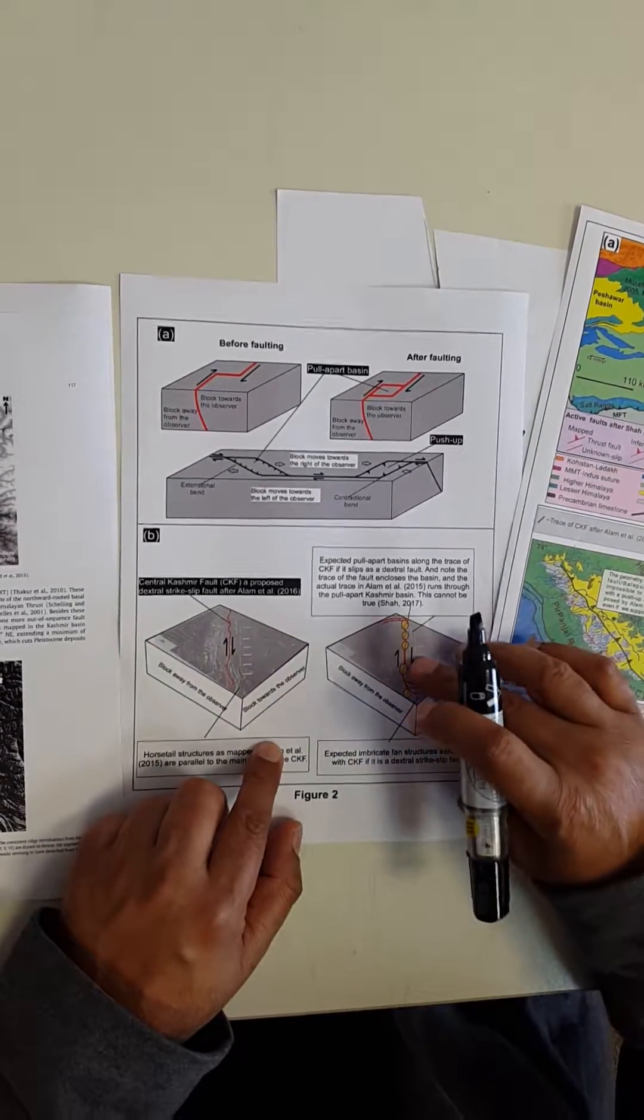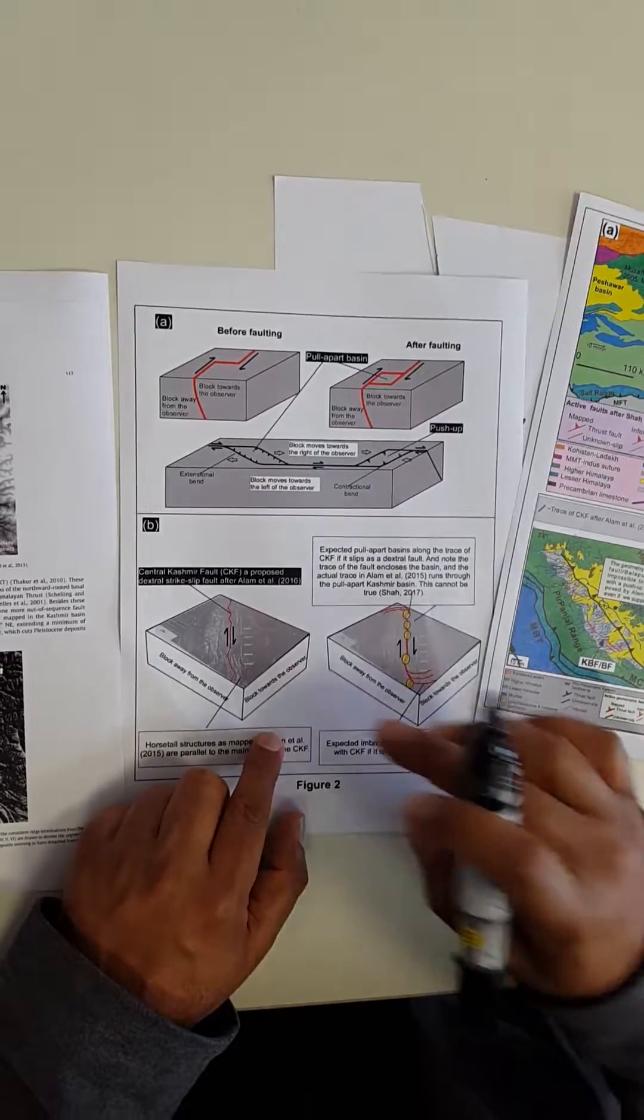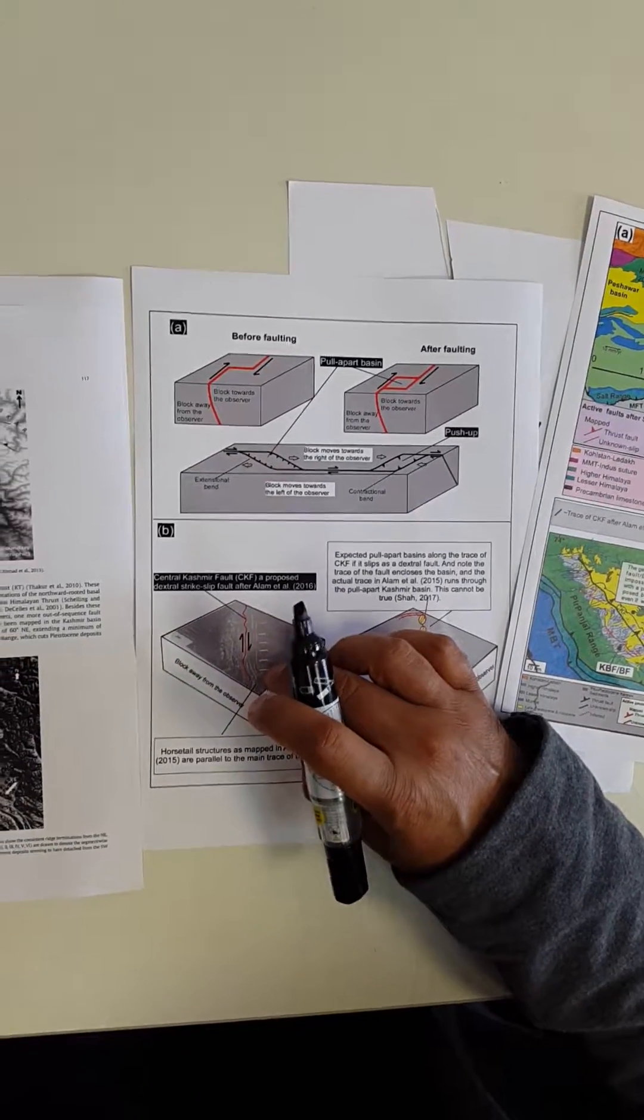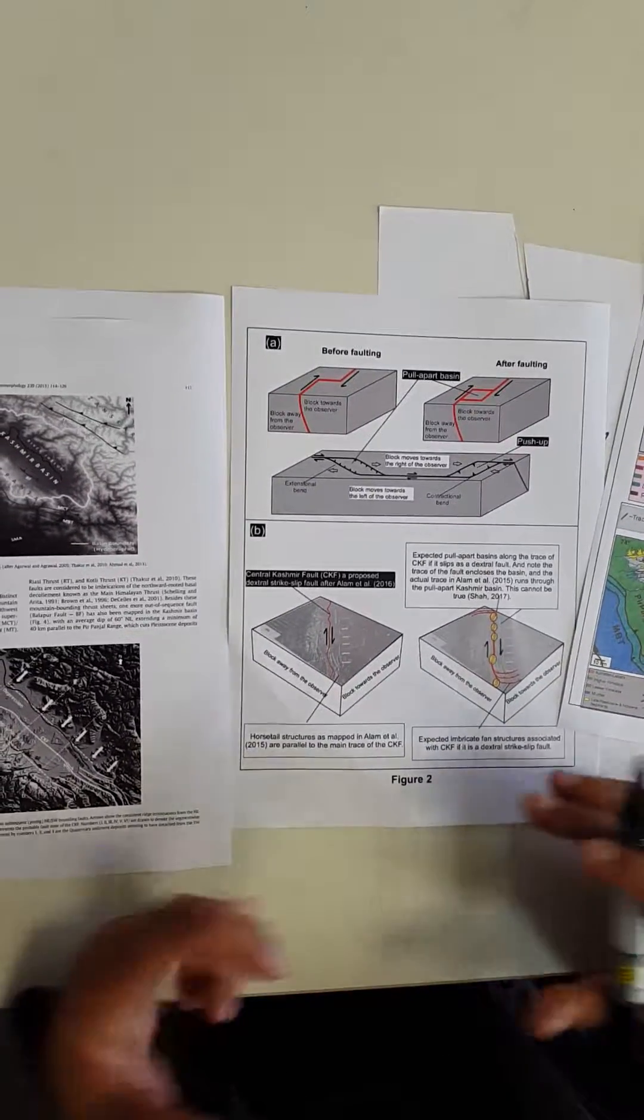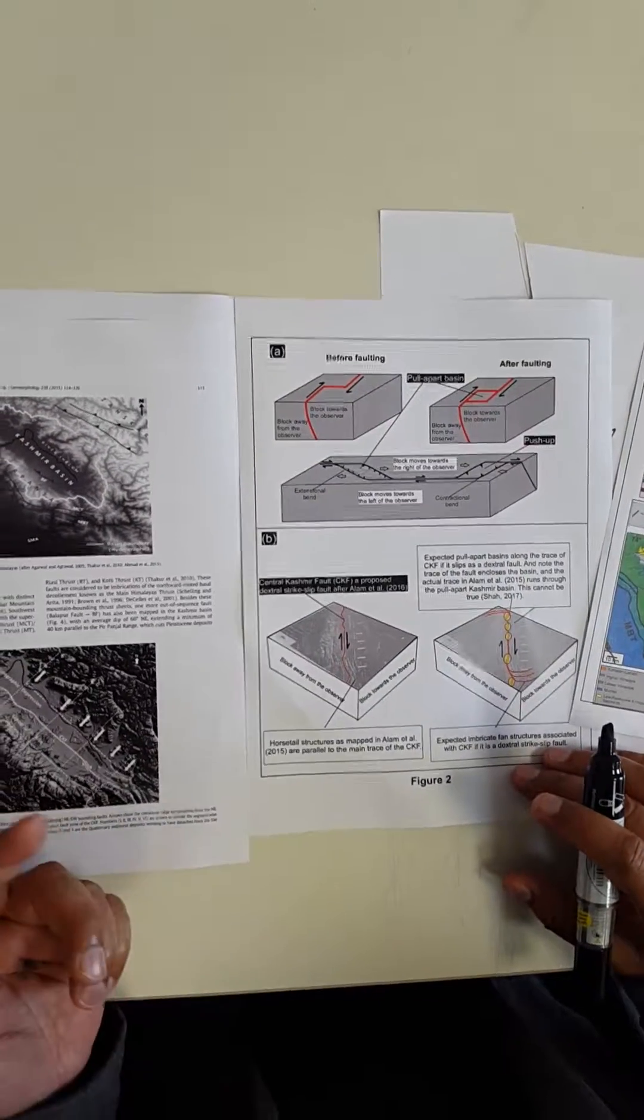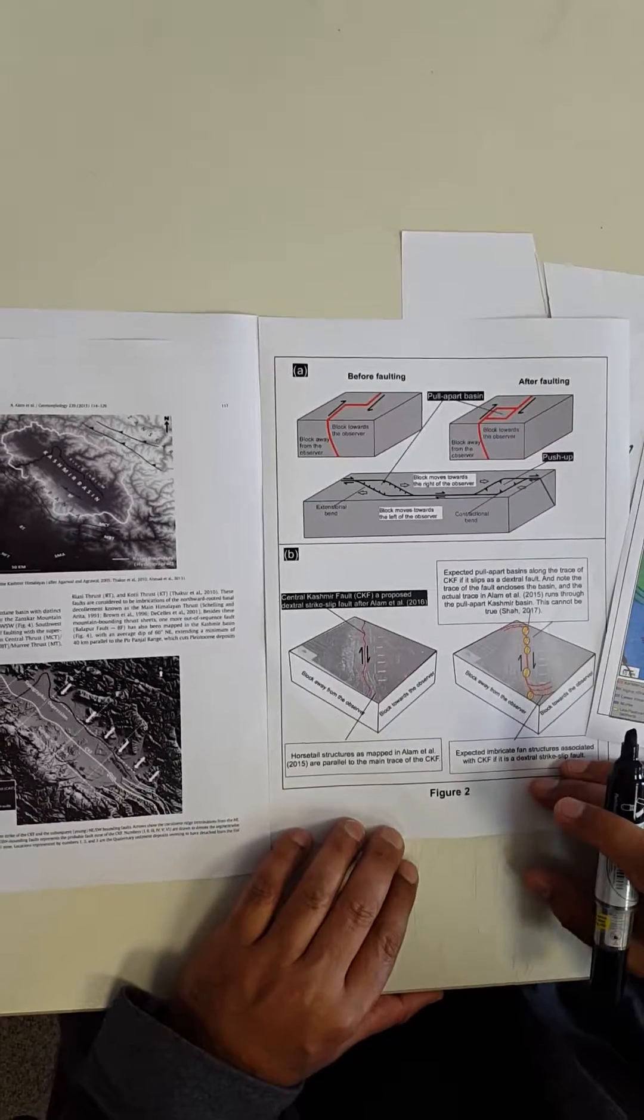So what it means is that if with that geometry the fault had moved in the past, it will create at least five basins, not just one Kashmir basin. So even with the geometry that they have mapped, it is simply impossible to get just one basin in the wild, even if we say it exists. And it simply does not exist. Thank you.